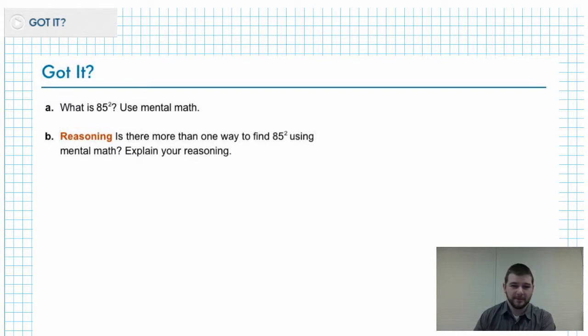If you try and are unable to complete this using mental math, you're welcome to use paper. But try to remember the steps that you've learned that can help you use mental math to solve problems like this more quickly. And part B: Is there more than one way to find 85 squared using mental math? Explain your reasoning.